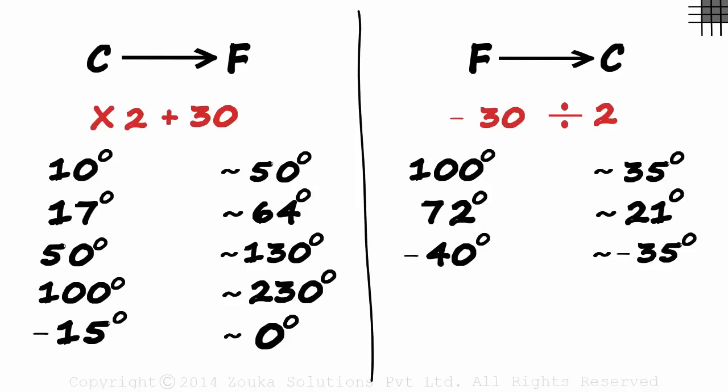But what if you forget the ways of conversion? Remember, for the same temperature, Fahrenheit is always larger. So multiplying it with 2 and adding 30 will definitely give us a larger number. To convert from Celsius to Fahrenheit, we multiply and add.